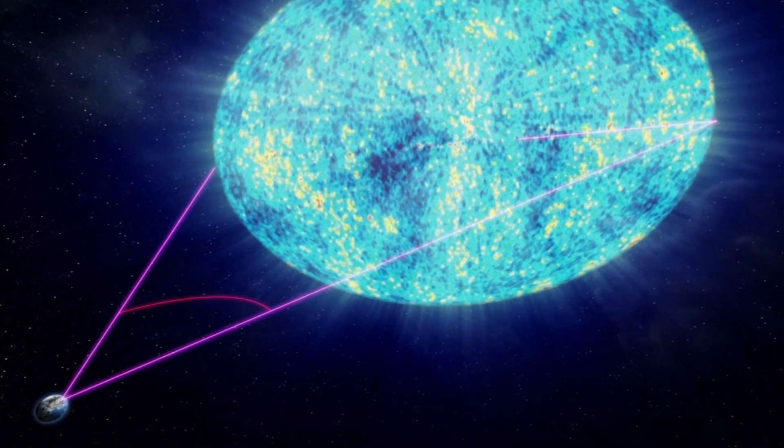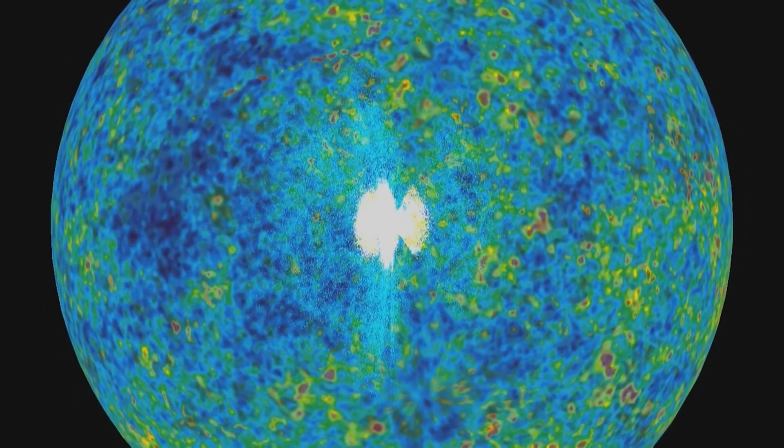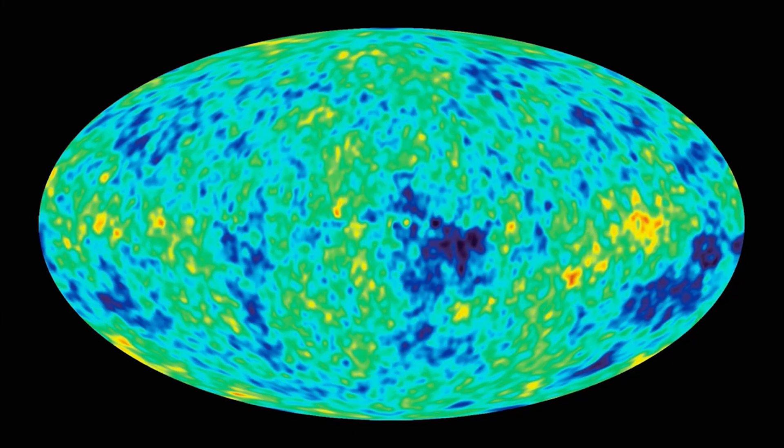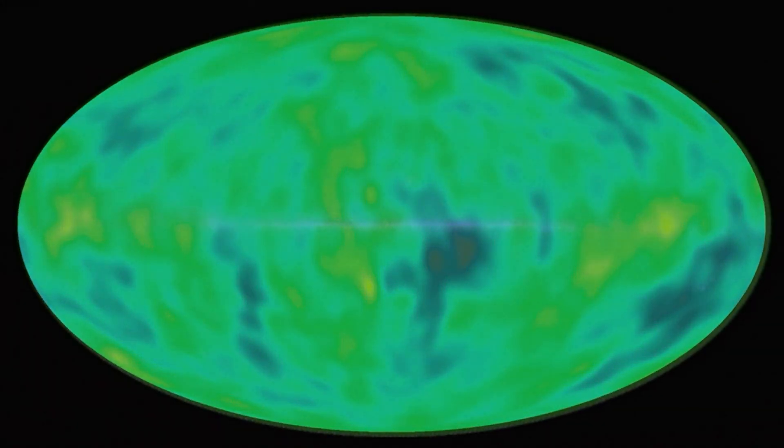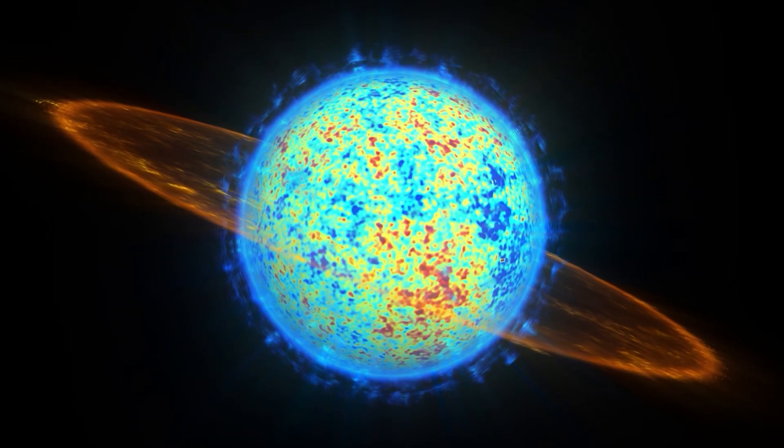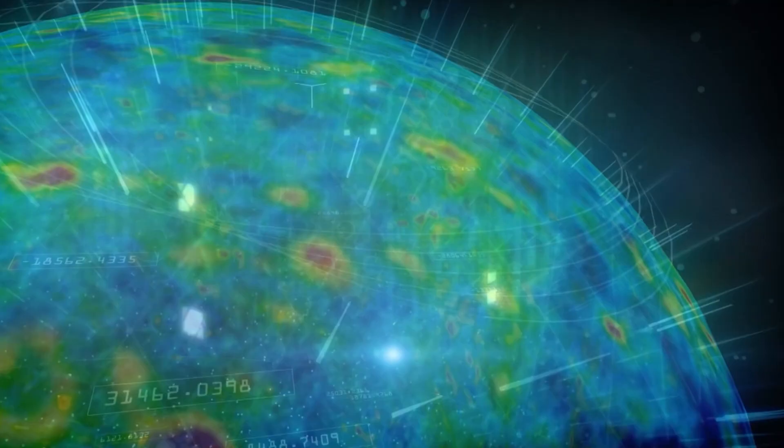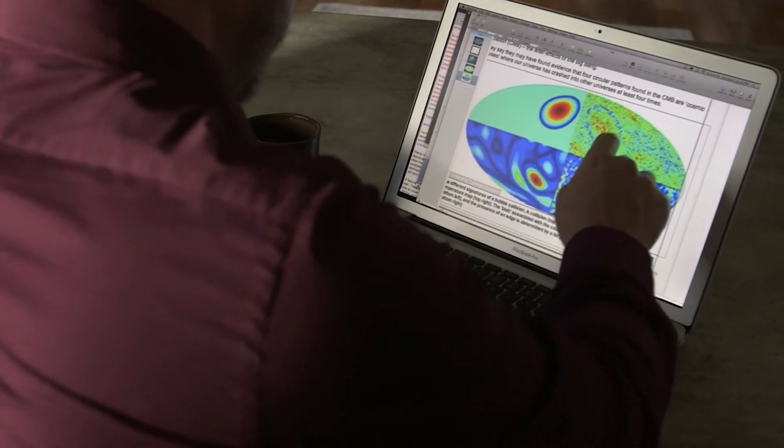But it must be understood that looking into the depths of the distant universe is almost the same as looking into the distant past, and the further away you look, the older it gets. At the distance of the last scattering plane, we would begin to see the moment when the universe becomes transparent to photons. In other words, the laws of physics would prevent us from seeing beyond that point. Then, what exactly is obscured by the laws of physics?